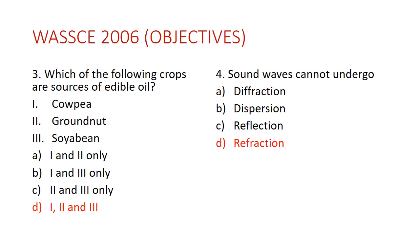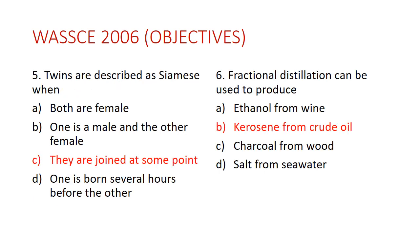Question four: sound waves cannot undergo A) diffraction, B) dispersion, C) reflection, D) refraction. The answer is refraction, because refraction is the change of direction of light when it travels from one medium to another. Sound waves don't bend when moving from one medium to another, but they can undergo diffraction, dispersion, and reflection. Reflection of sound is known as echo.